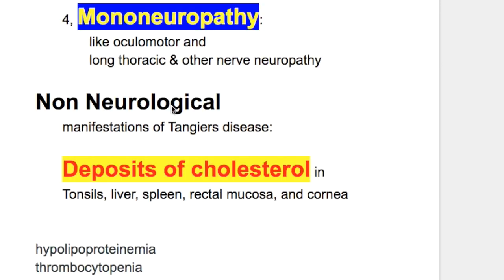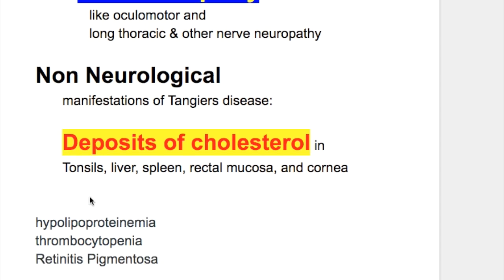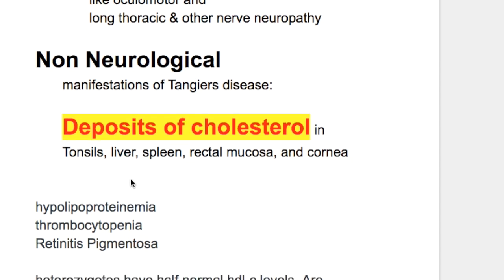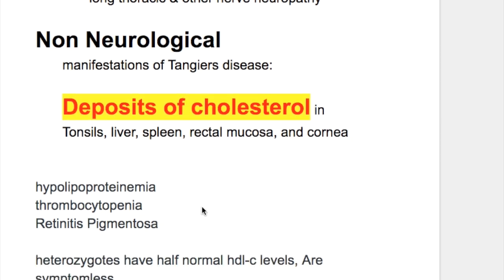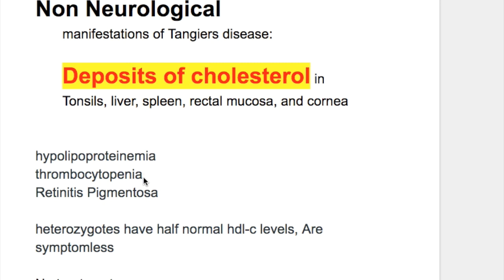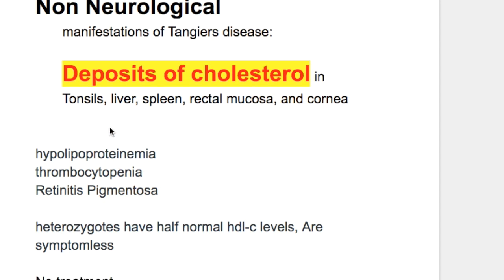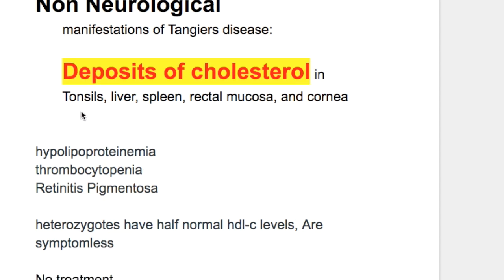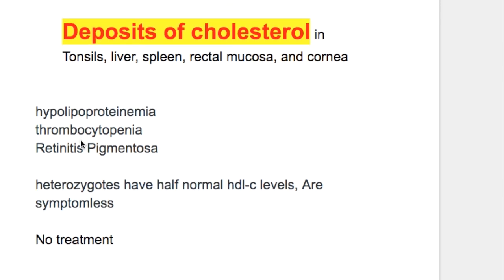The non-neurological features of Tangier's disease involve deposition of cholesterol in different organs — mainly in the tonsils, liver, spleen, rectal mucosa, and cornea — causing hepatosplenomegaly. There is also hypolipoproteinemia, thrombocytopenia, and retinitis pigmentosa. Tonsils become enlarged and orange in color. There is no treatment.